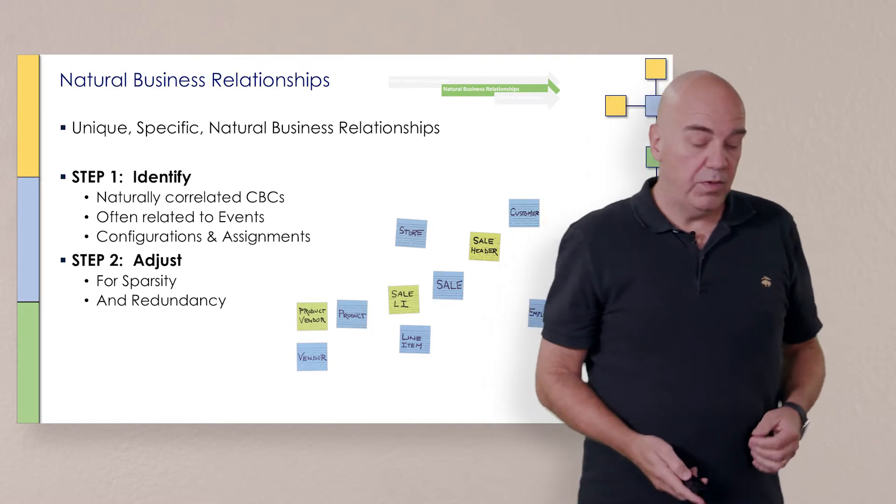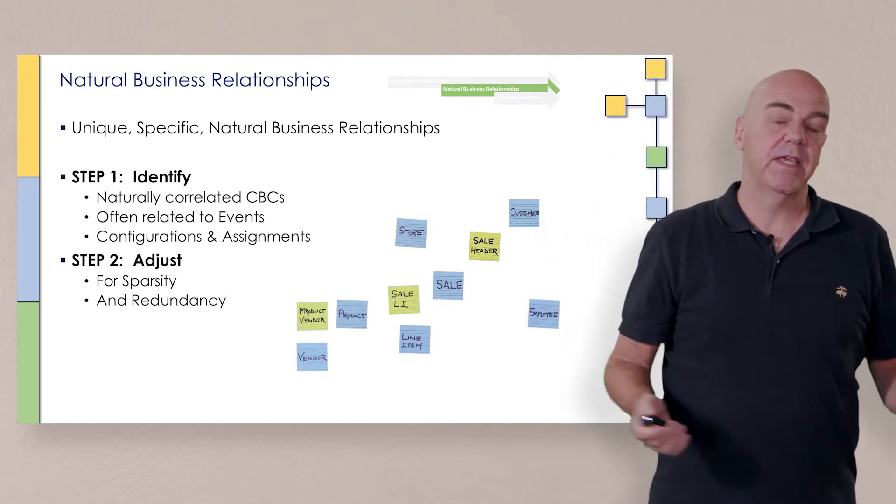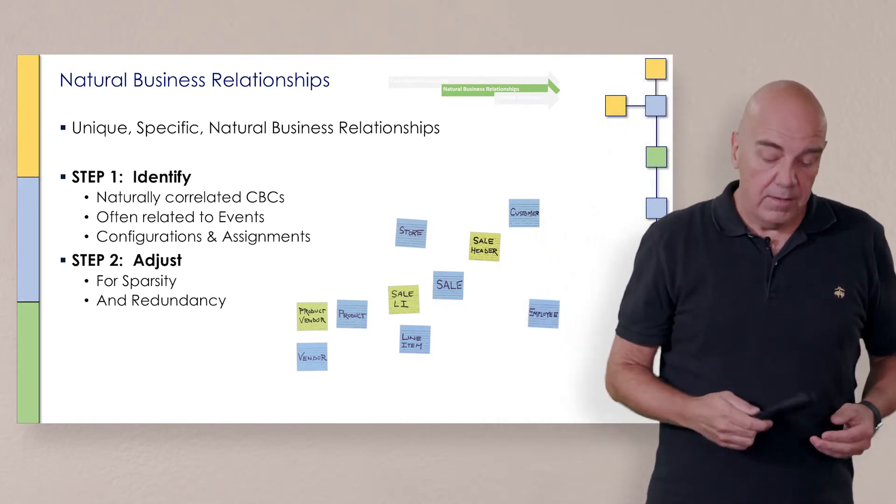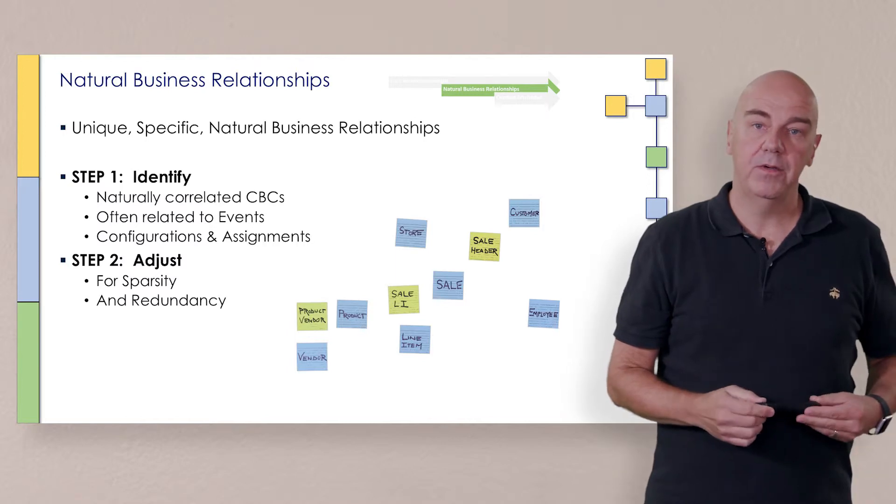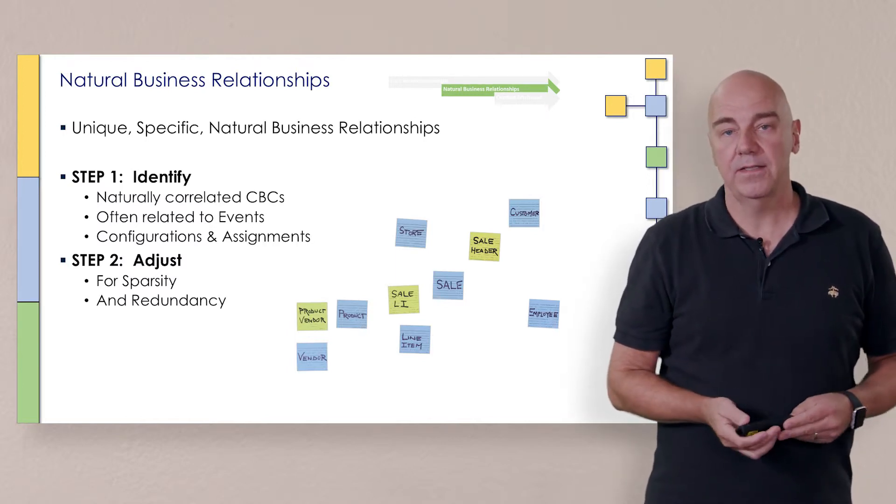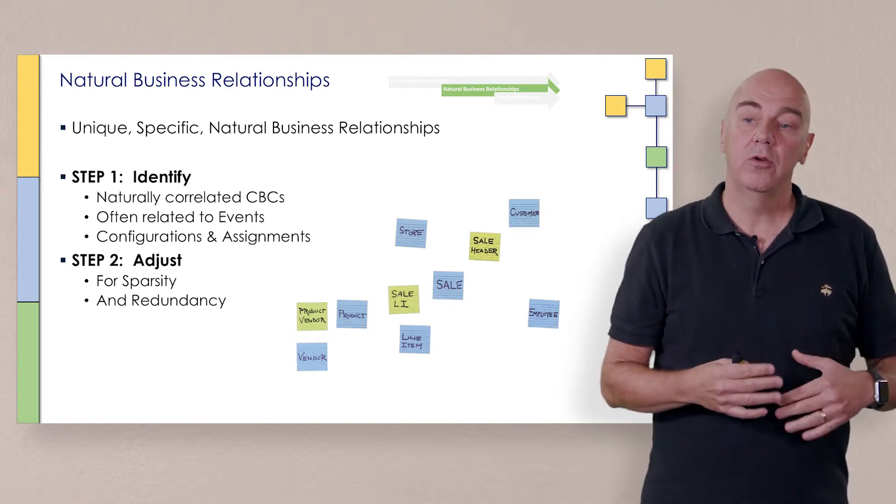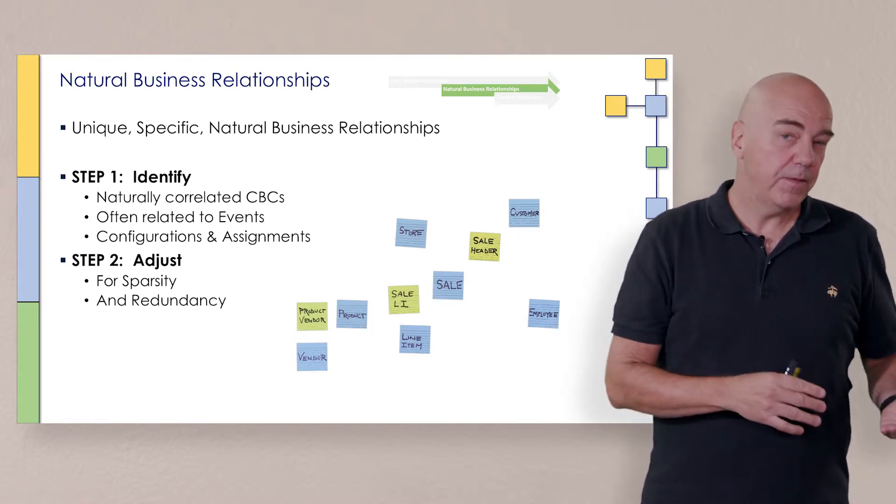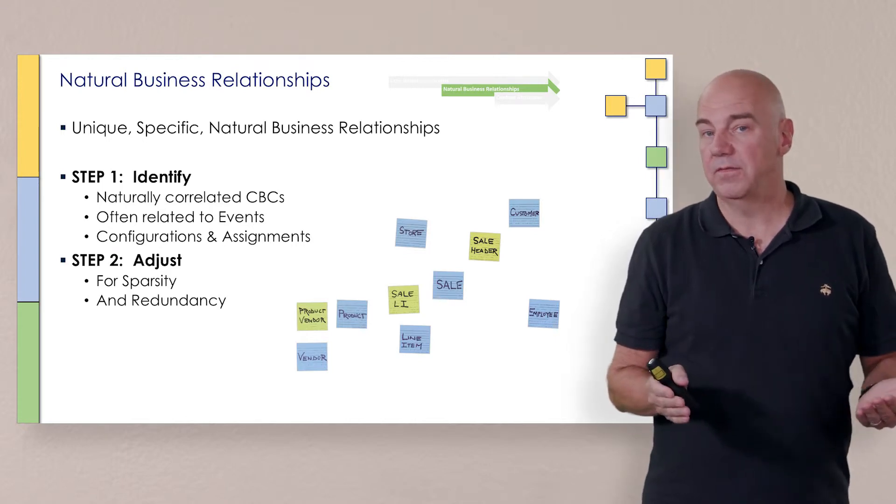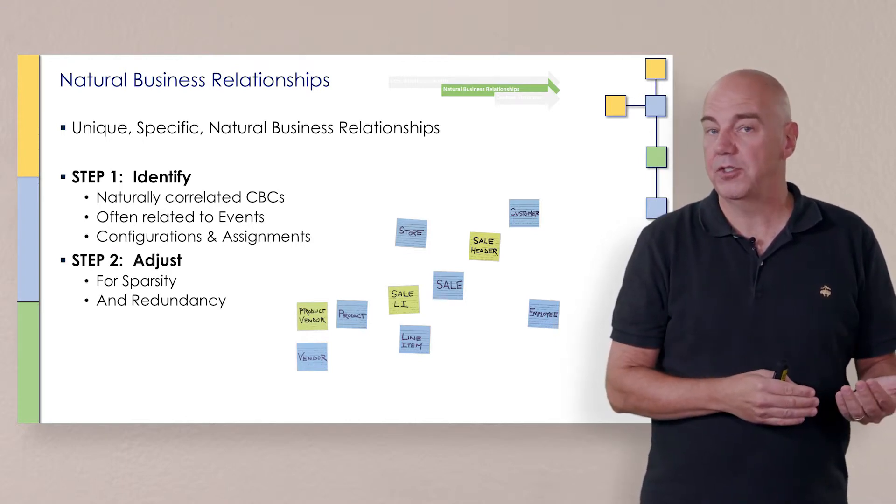Okay, so we've finished the first process and now we've just gotten into the second part of the process. And here's where I want to really clarify an important thing. The first thing we do in this process is, number one, identify naturally correlated core business concepts. Often they relate to events, but it's not always an event. It could be some kind of a configuration or assignment.